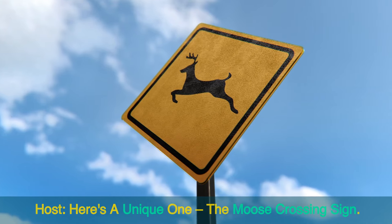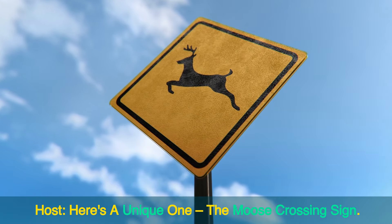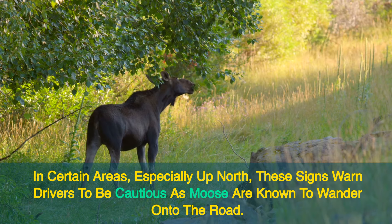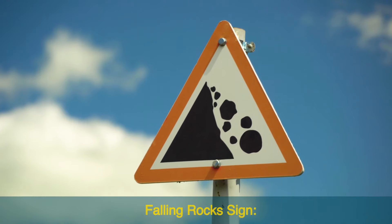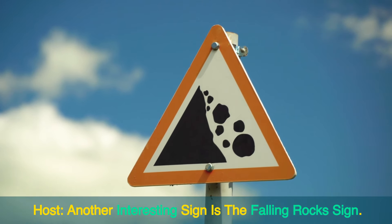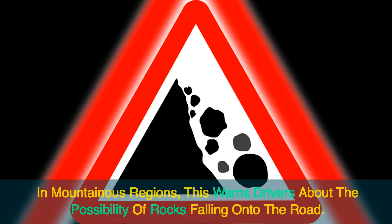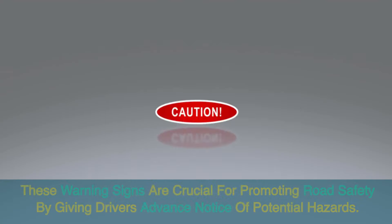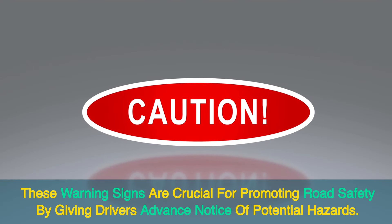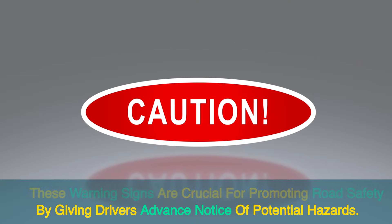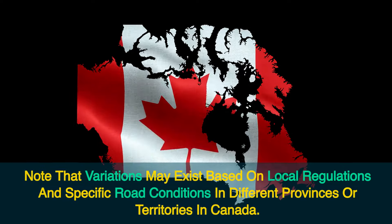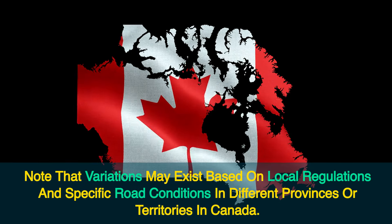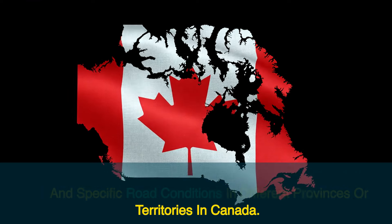Here's a unique one: the moose crossing sign. In certain areas, especially up north, these signs warn drivers to be cautious as moose are known to wander onto the road. Another interesting sign is the falling rock sign. In mountainous regions, this warns drivers about the possibility of rocks falling onto the road. These warning signs are crucial for promoting road safety by giving drivers advance notice of potential hazards. Always be attentive to these signs and adjust your driving accordingly. Note that variations may exist based on local regulations and specific road conditions in different provinces or territories in Canada.